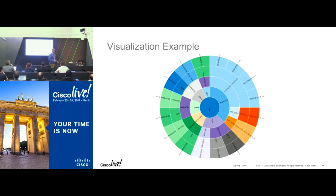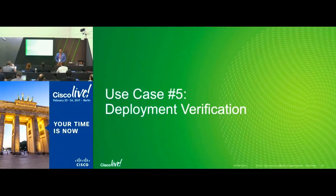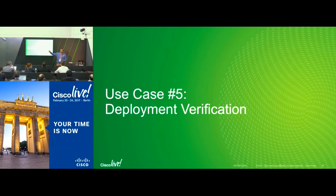Regarding ACI version requirements: REST APIs and ACI Toolkit work from version 1.0 onwards. To use the App Store for apps running inside APIC, you need version 2.2 or higher, which adds an app tab. If you want to build standalone apps using ACI Toolkit, any version works. The fifth use case is deployment verification — writing scripts to validate that L3 outs are properly configured, OSPF sessions are up, and BGP sessions are up. If validation passes, move to production; if not, fix issues first.